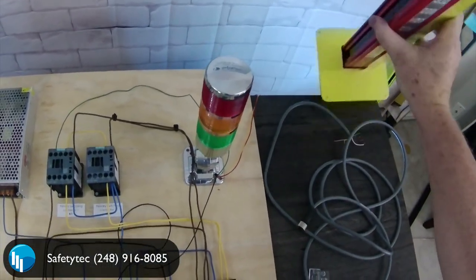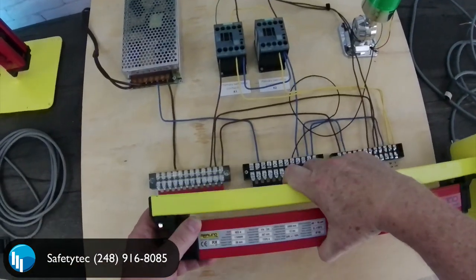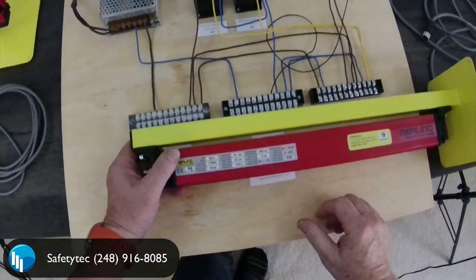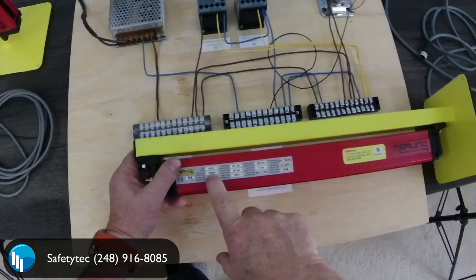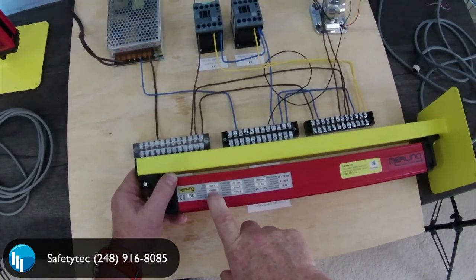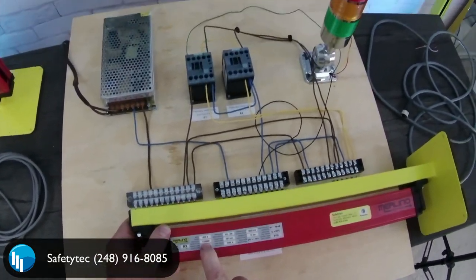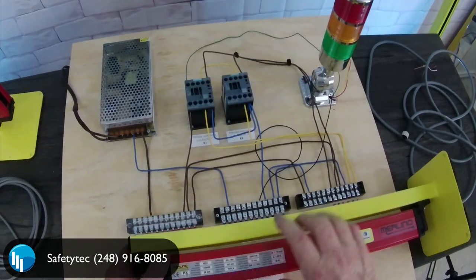Before we get started, it's really important to mention that with all light curtains you need to make sure that the serial number on the transmitter matches the serial number on the receiver. Very, very important.